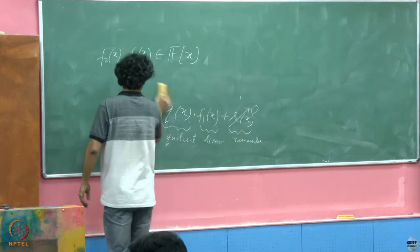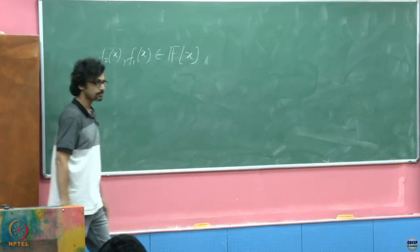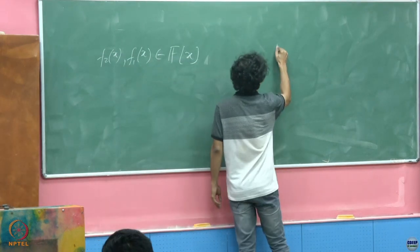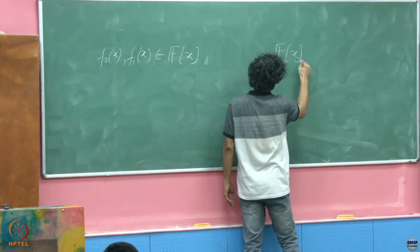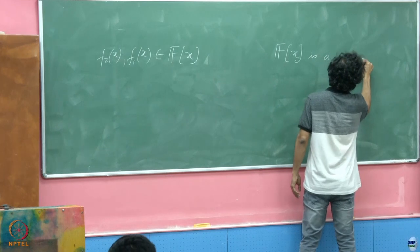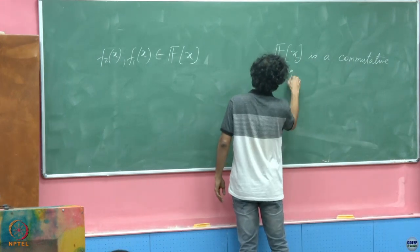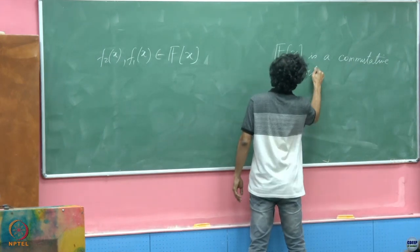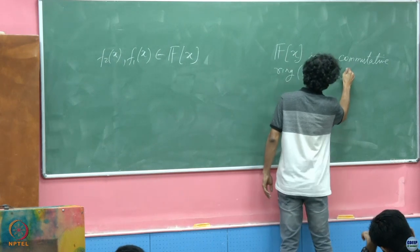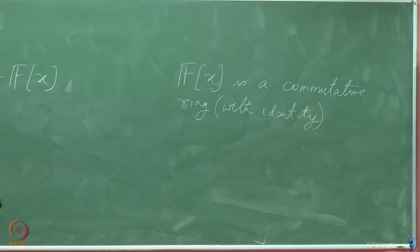We will have to remember this as we go along because we will be using it. Now, the next thing I am going to claim is that F[x] is a commutative ring with identity — the identity being the constant polynomial 1. There is nothing to really prove here, just verify the properties.